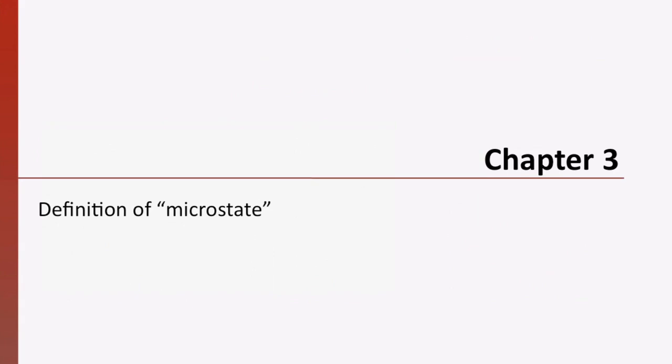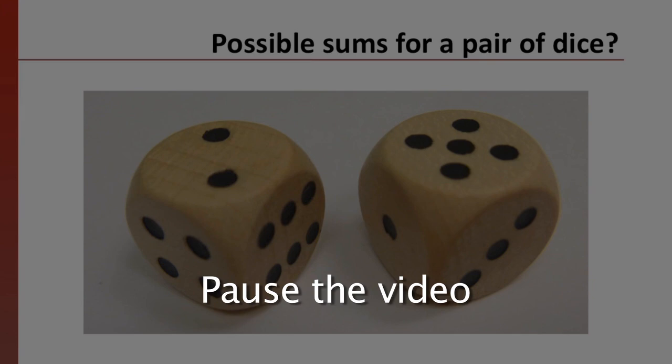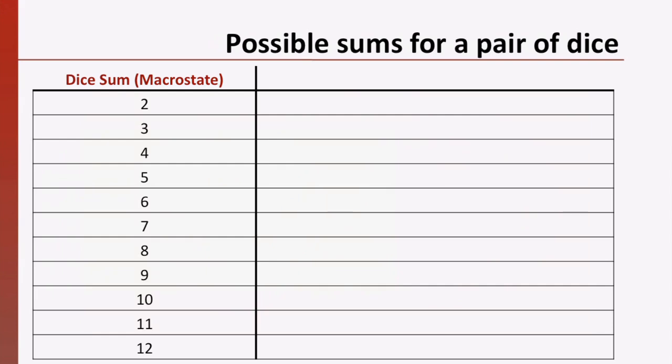Let's use an analogy to understand the term microstate. Let's say that you have two dice. What are all the possible sums for a pair of dice? Pause the video here and take a moment to jot them down. Okay, you should have a list that looks something like this. We would call these sums possible macrostates of our system. The macrostate doesn't tell us what each individual die reads when we roll them, just the total or macroscopic view, if you will.